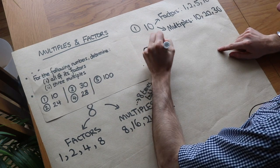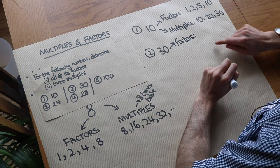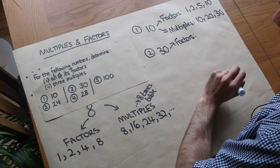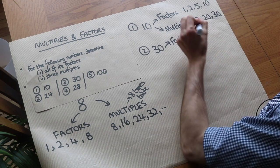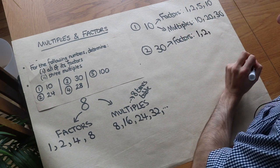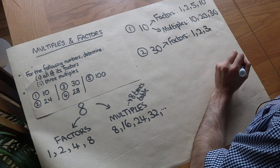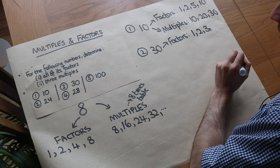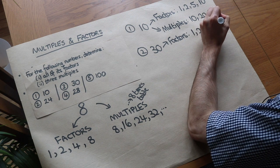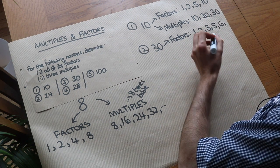What about the number 30? What are its factors? Anything that goes into 10 is also going to go into 30 because 10 goes into 30. So we'll have 1 and 2 again. Does 3 go into 30? Yes, so that's a factor. 4? No, it doesn't go into 30 a whole number of times. 5 does. What about 6? Yes, 6 goes into 30. 7, 8, 9 — no. 10? Yes.